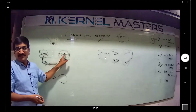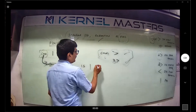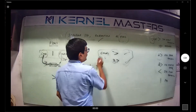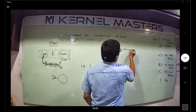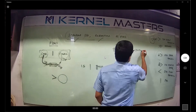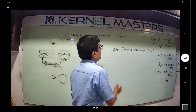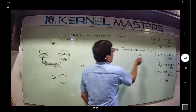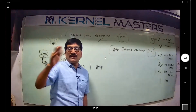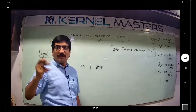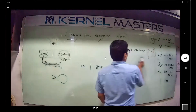For example, first command is ls, pipe, grep command. The grep syntax is: grep, option, pattern, then file. I told them the grep command — the file argument is optional, not mandatory. They know the file is optional.